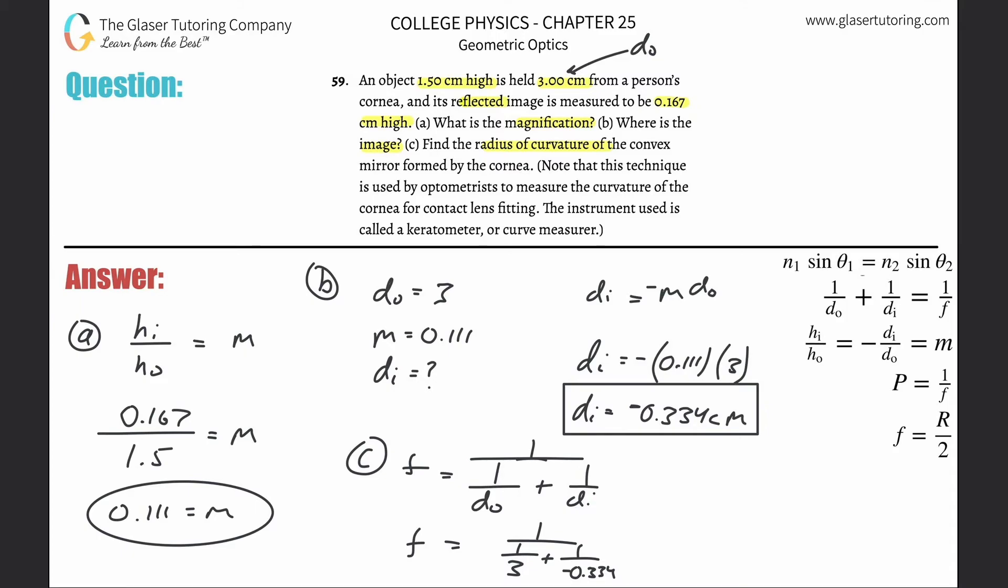So this is one divided by three plus one divided by negative 0.334 - obviously that works out with a minus sign - and then take one divided by that. The focal length here is negative 0.376 centimeters.